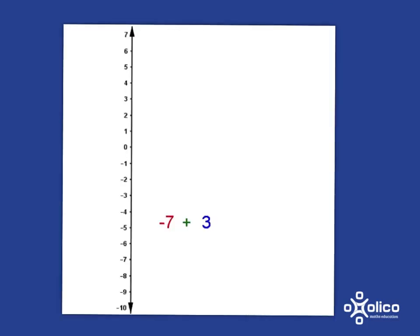What about negative 7 plus 3? Well, start point is negative 7. But this time, because it's a plus, we're going up 3 steps, which will end us at negative 4.